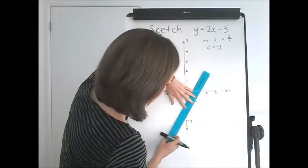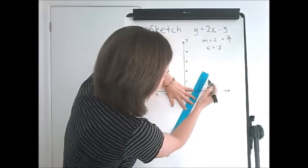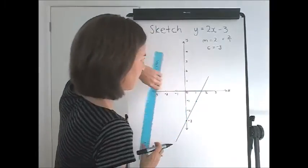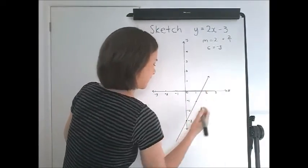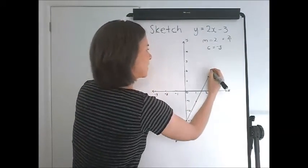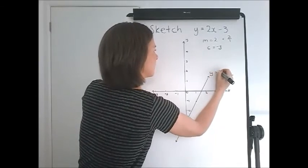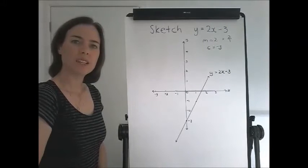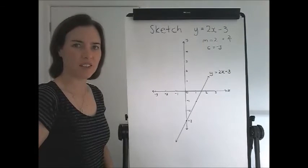Two points is all we need to draw a straight line. So place your ruler and draw it in. Arrows, and labels. Okay, there's the graph. That's all the detail that you need.